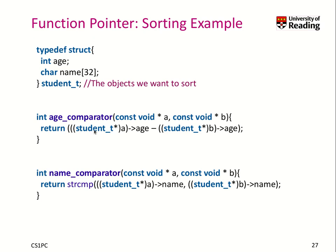That's what we are doing in these brackets. Then if we want to compare the age, we take the age element of the first element and subtract the age of the second element. That is basically the result of our age comparator. You can check and figure out that it returns a negative number if one of them is bigger than the other, and so on.